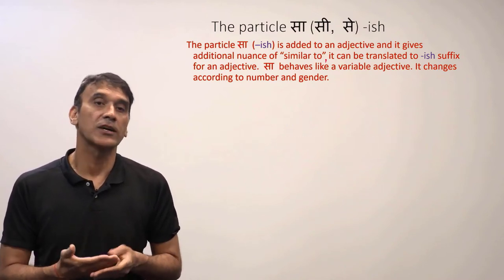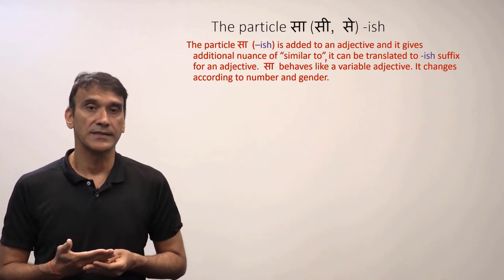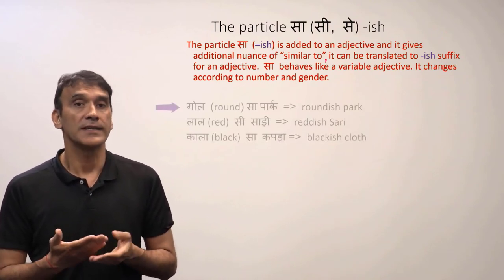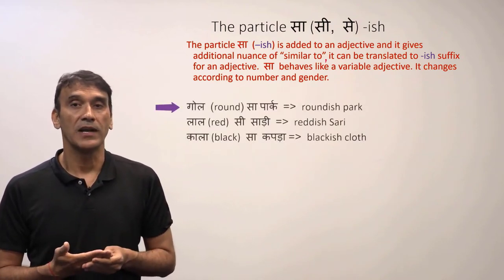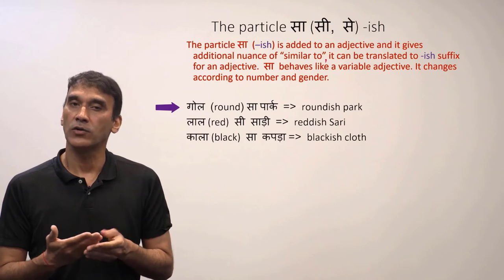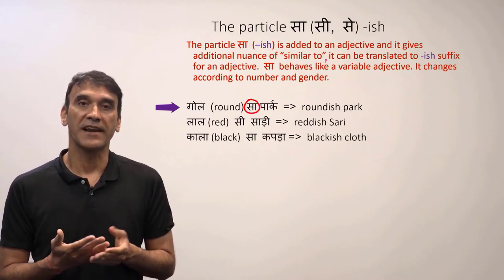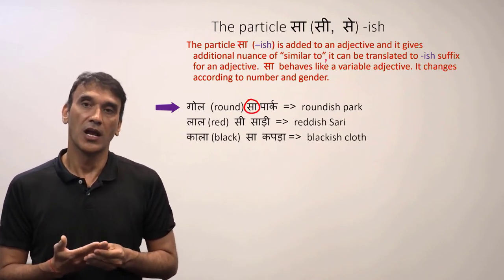'Sa' behaves like a variable adjective — it changes according to number, gender, and case. So, 'gol' is round, and when you add 'sa' to 'gol' it becomes 'roundish'.